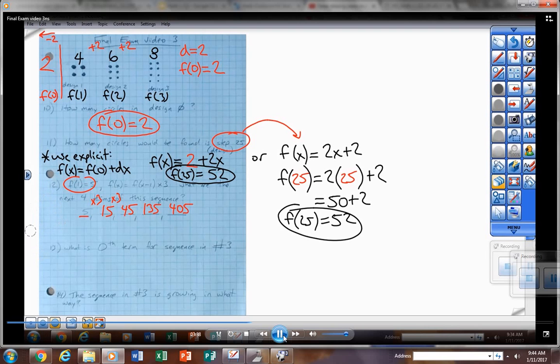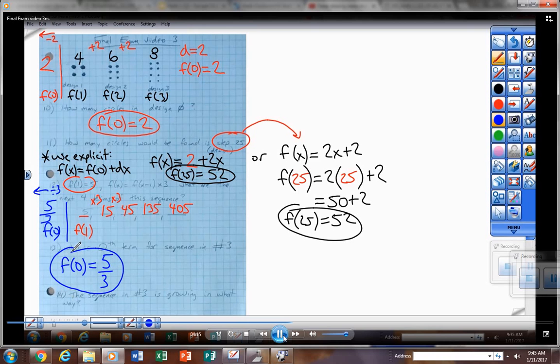To find the zero term for the sequence in number 12, I'm going to go back. And if I'm timesing by three going to the right, I'm going to be dividing by three going to the left. So if I take that five and divide by three, I get five over three. That is the zero term, and that makes sense because if I took five over three times three, it would give me the first term five. The threes would cancel. So again, that zero term is five over three, or five times one third.